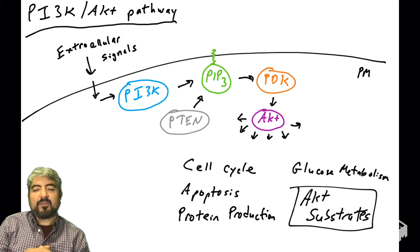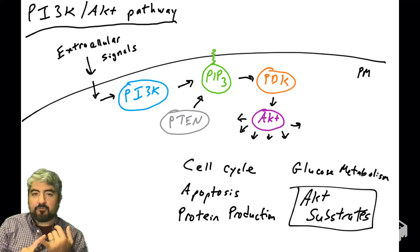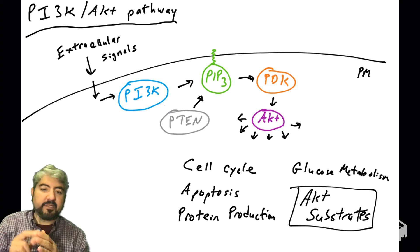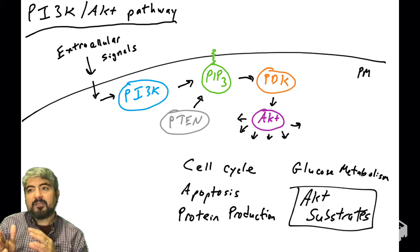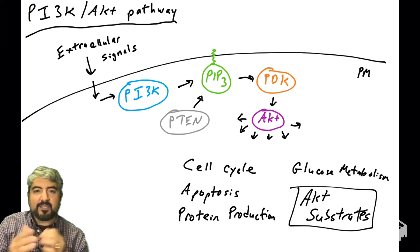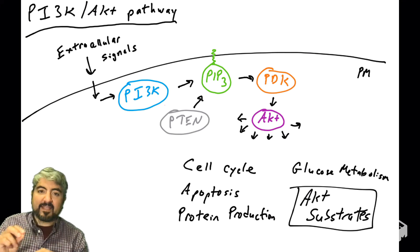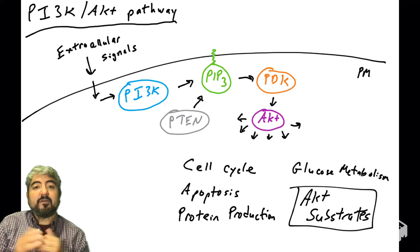The PI3 kinase AKT pathway is a very important regulator of cell growth, cell division, cell cycle, apoptosis, protein synthesis, glucose metabolism, and differentiation. Many cellular processes are regulated by the PI3 kinase AKT pathway. So we're going to learn about some of the AKT substrates.